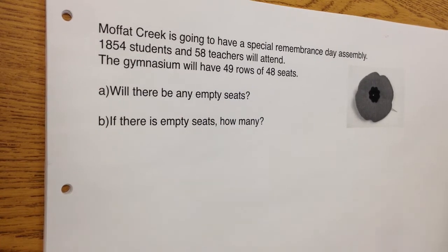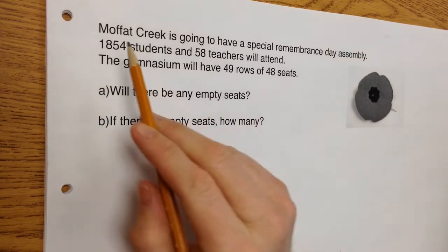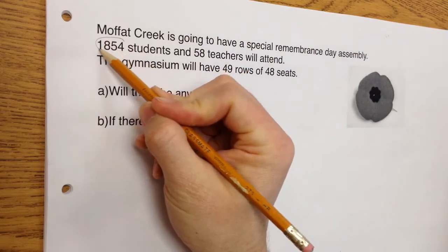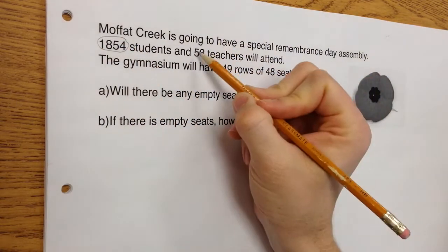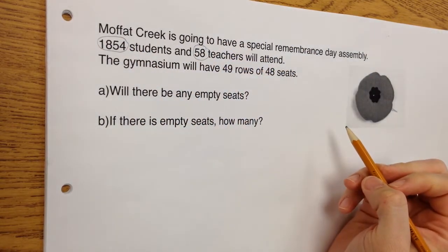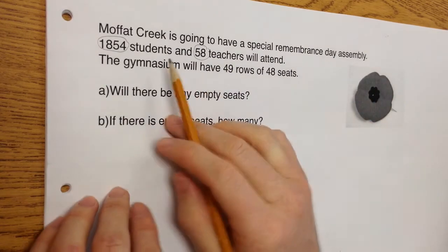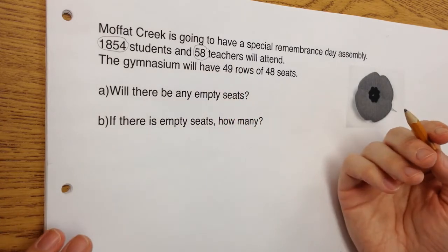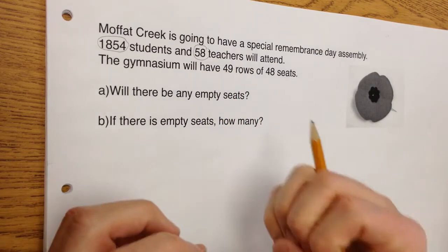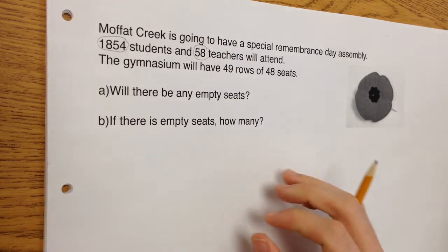The first thing I have to do is look at my numbers. I know I'm going to have 1,854 students and 58 teachers. That's the amount of people who are attending. So I have to think, if there's this many students and this many teachers, what do I do? If I have this amount and this amount and I want to find a total, I have to add them together.